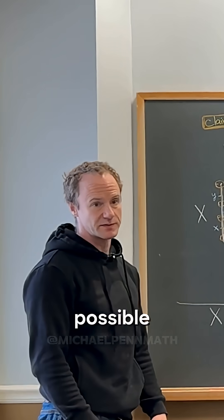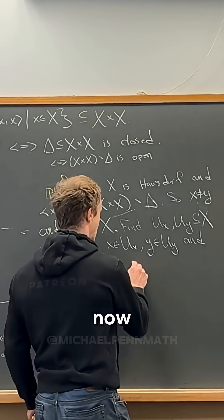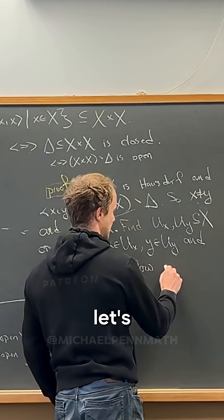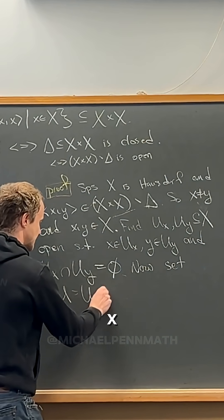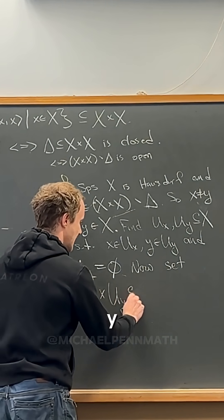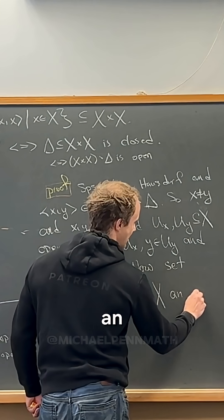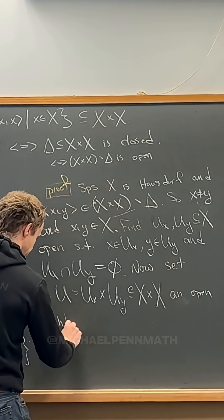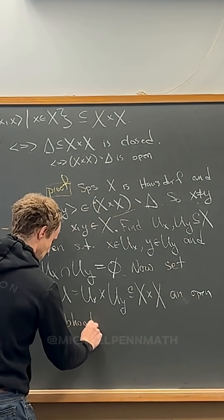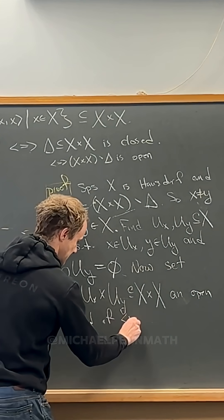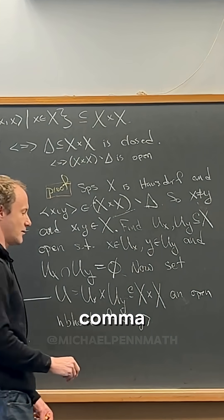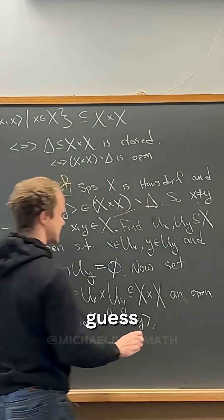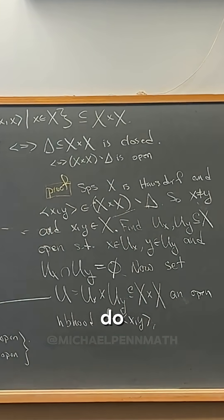Now that's possible because it's Hausdorff, right? Now let's maybe set u equal to u sub x cross u sub y and observe that that is an open neighborhood of the ordered pair x comma y in, yeah I guess it's already in X cross X so we don't need anything.